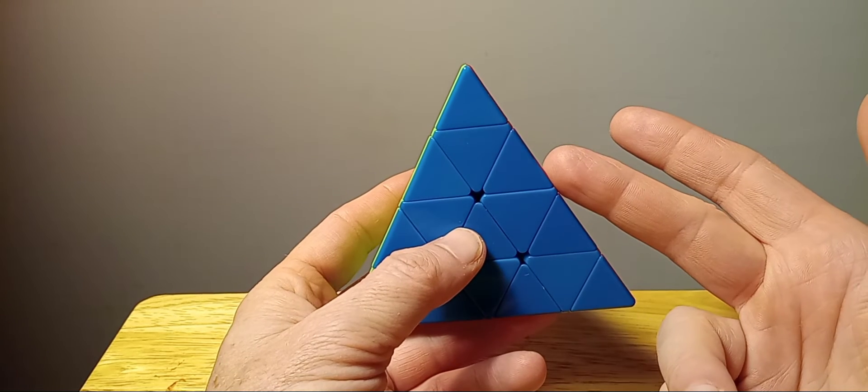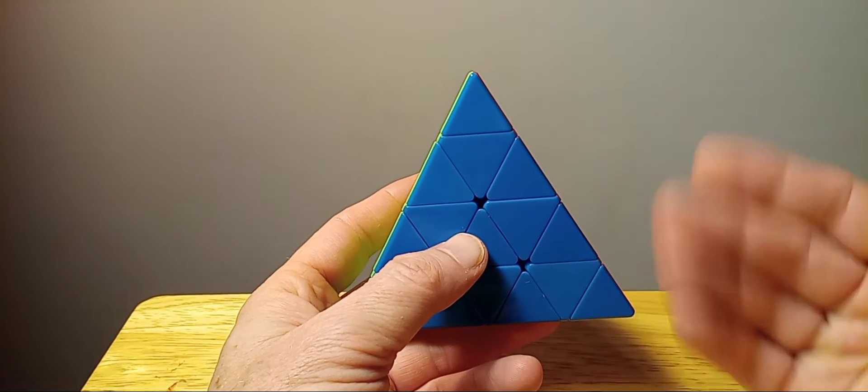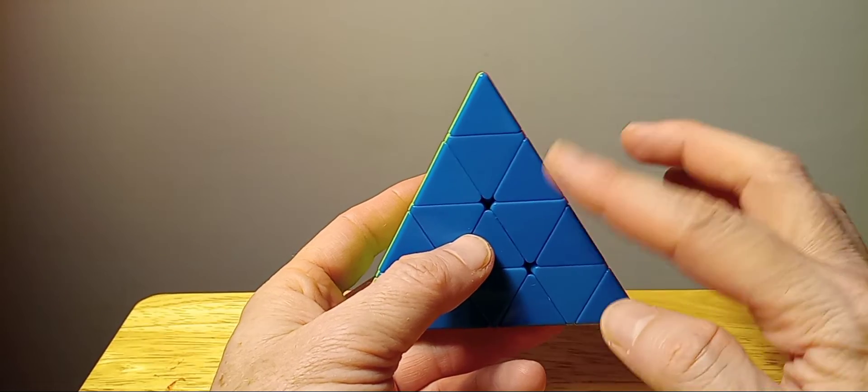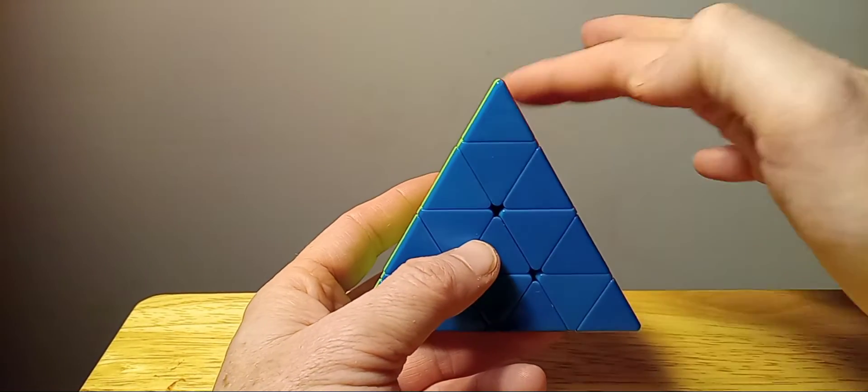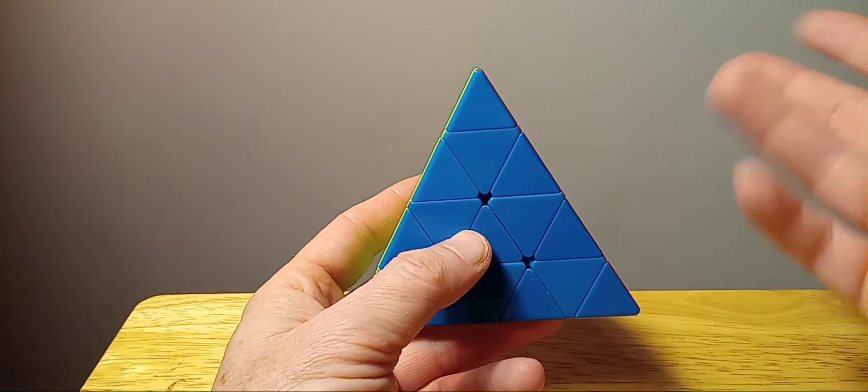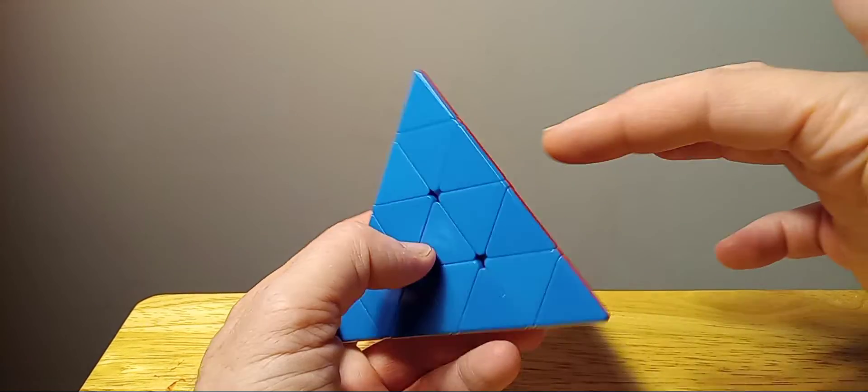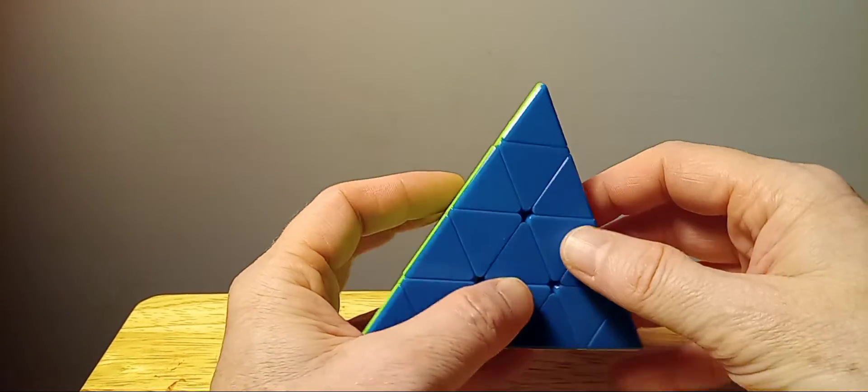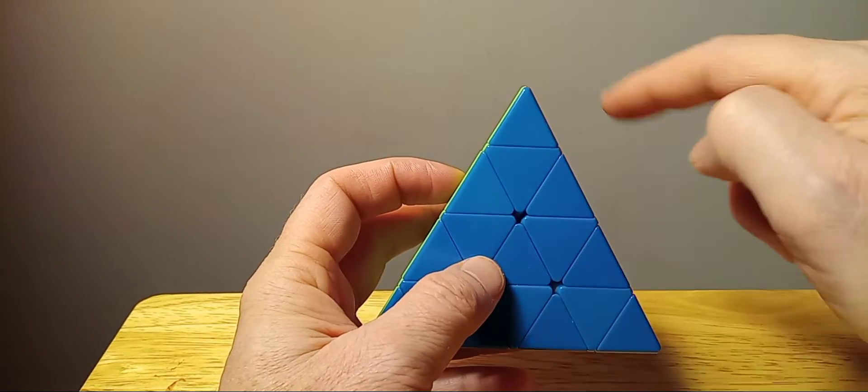Sometimes you might have to do it twice depending on the position of the piece. You might have to do the same move twice, but usually if you find where it's at and just follow what I was saying, you could just figure it out like whichever way it's going to go.